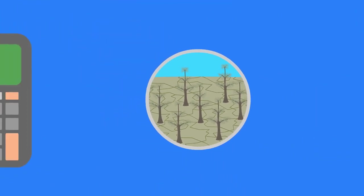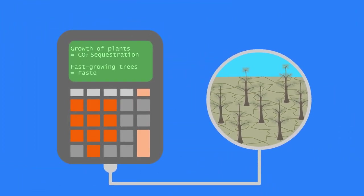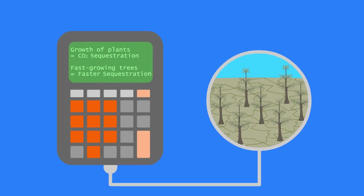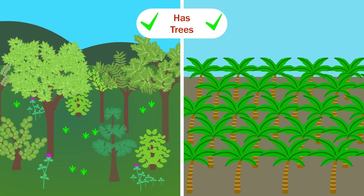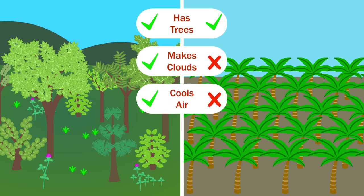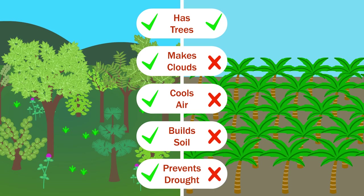That kind of thing often happens when we use carbon calculations to guide ecosystem regeneration. We have to think holistically. A healthy forest is more than a bunch of trees. A palm oil plantation has a lot of trees, but it doesn't make clouds, cool the air, build soil, or prevent drought like a forest does.